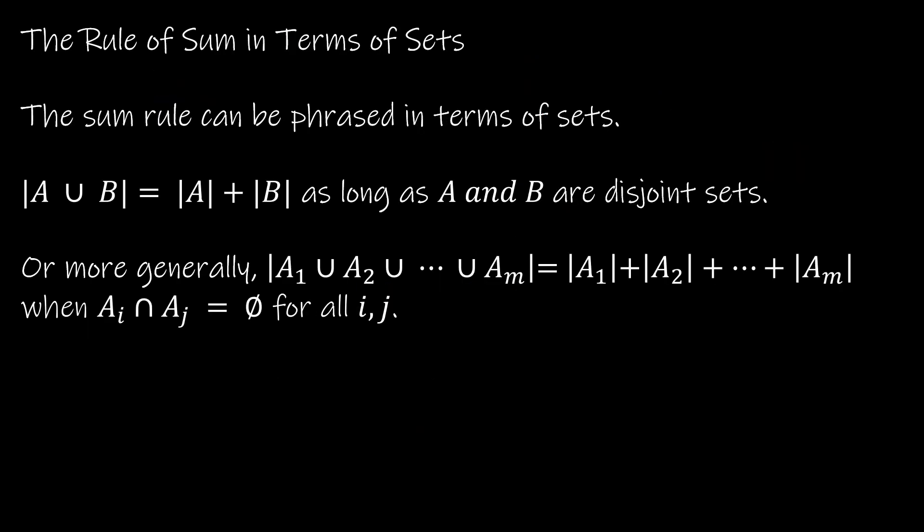In this course, you need to become very familiar and very comfortable with mathematical definitions. And so here's our first mathematical definition. The rule of sum in terms of sets. It says that the union of two sets, A union B, meaning we are adding the sets together, is the cardinality. So cardinality, which just means the number of elements. So the number of elements in the union of two sets is simply the number of elements in the first set plus the number of elements in the second set. Again, as long as A and B are disjoint sets.